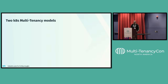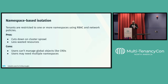Primarily in the past, we've had two Kubernetes multi-tenancy models: namespace-based isolation and cluster-based isolation. With namespace-based isolation, tenants are restricted to one or more namespaces. Most of you are probably familiar with this, but it cuts down on cluster sprawl and there's less wasted resources. Some cons are that users can't manage global objects, which might be a problem for dev environments, and users may need multiple namespaces, and things can get kind of ugly with exceptions for network policies.